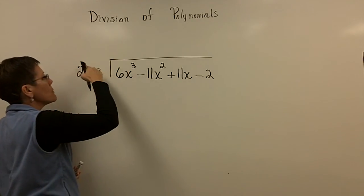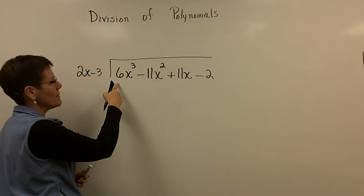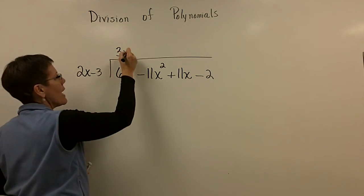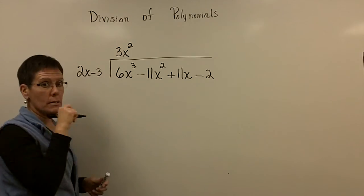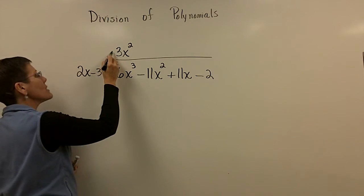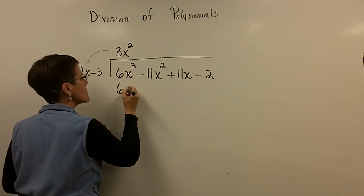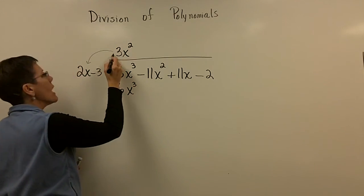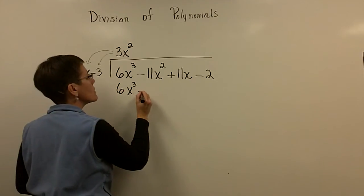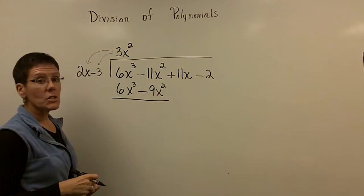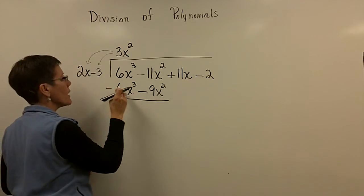I wonder what number times 2 will give me 6. 3. x times x to the second will give me x to the cube, third power. And then I just like to say this out loud again. Does 3x squared times 2x give me the 6x cubed? It does. And 3x squared times a minus 3 gives me a minus 9x squared. And now I'm going to change my signs because I'm subtracting or adding the opposite.